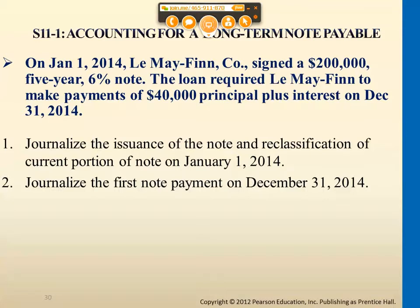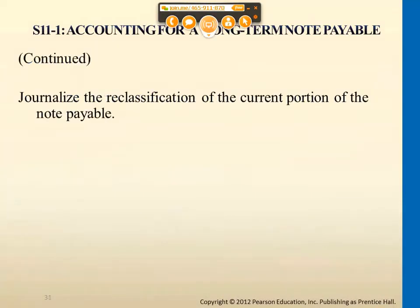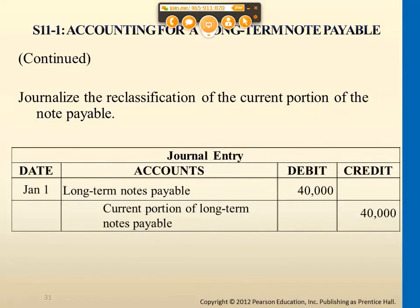There are two entries on January 1st, 2014. The first is the issuance entry: issuing long-term notes and collecting cash — you borrowed $200,000. But this amount is not paid altogether five years from now; we're paying a portion of $40,000 every single year. So after the issuance entry, we immediately reclassify part of long-term notes into the current portion. They still belong to the liability category, just different types — the current portion of long-term notes is the short-term part due each year, $40,000.